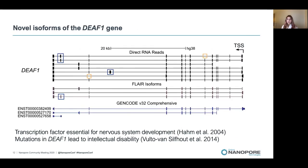Shown here is one example of novel transcripts from the DEF1 gene, which is implicated in neurodevelopmental disorders. The novel features are highlighted in colored boxes and show inclusion of exons in longer transcripts, exon skipping, and novel exons as well.